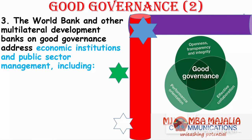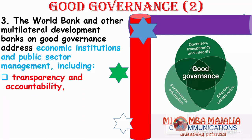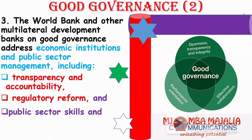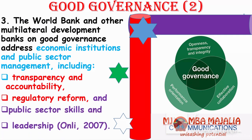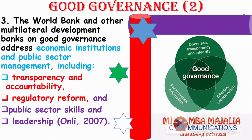Continuing with good governance — what does the World Bank say? It says good governance addresses economic institutions and public sector management including: transparency and accountability, regulatory reform, public sector skills, and leadership. Those are the sectors that go with good governance. A Venn diagram of good governance shows the same terms: effective collaboration, performance orientation, openness, transparency, and integrity.